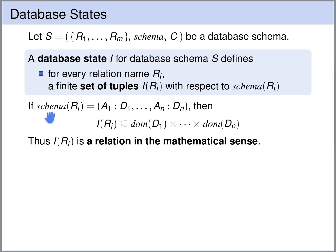In other words, if the schema of R_i is attribute A1 over domain D1, attribute A_n over domain D_n, then this set of tuples I(R_i) is a subset of the cross product of domains D1, D2, D3, up to D_n.